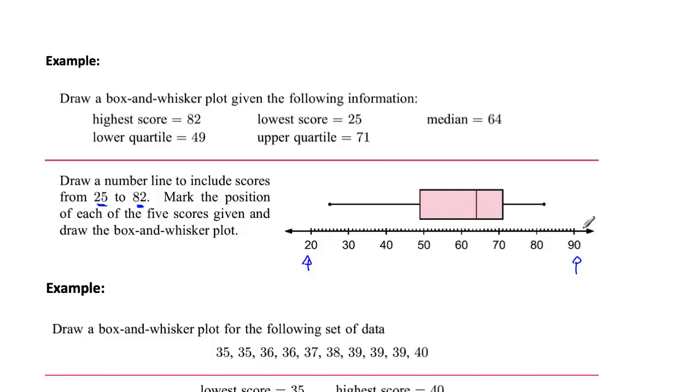And then we need to mark in the five bits of information. So the first one that we need here is the lowest score which is down here and the lowest score was 25. So there it is there. And the upper one we put a dot there by the way, a dot at the beginning and the end. So the top score is 82 so there it goes.